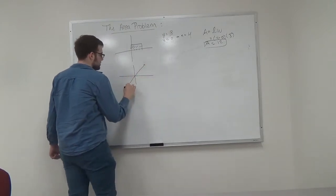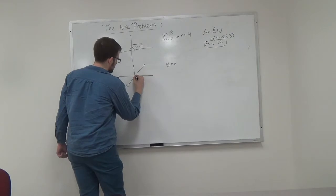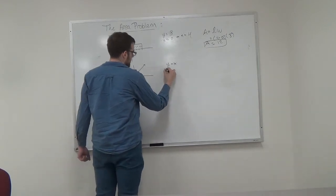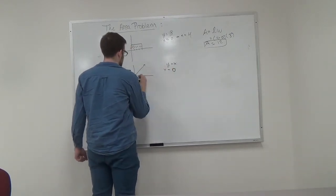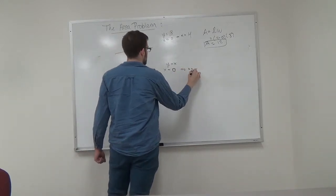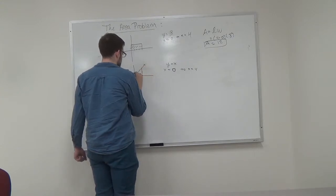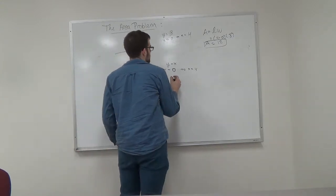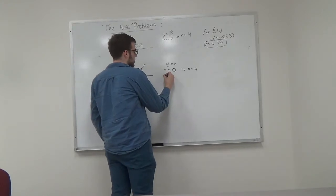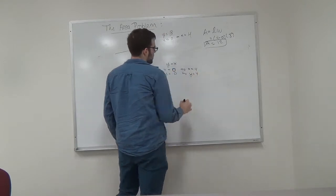Next, we're going to do y is equal to x and we're going to go from x is equal to 0 to x is equal to 4. As a result, we're going from y is equal to 0 to y is equal to 4.